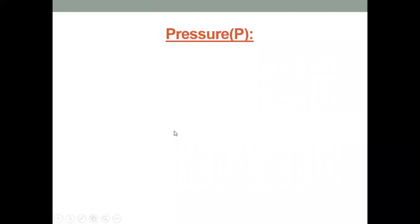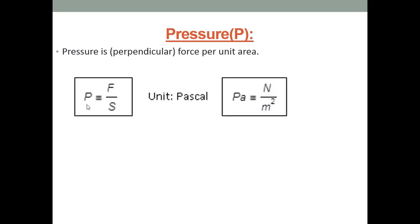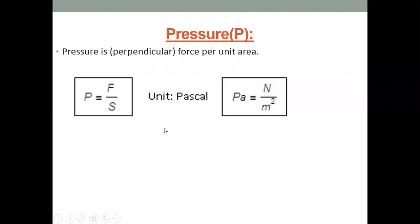The force per unit area is called pressure. We use the formula: pressure equals force over area. The area can be any shape — a circle, square, or triangle. When we divide the force by the area using this formula, we find the pressure on the object. The unit of pressure is Pascal. Sometimes you'll see it in atmospheres (ATM) or Newton per meter squared, but the SI unit is Pascal.